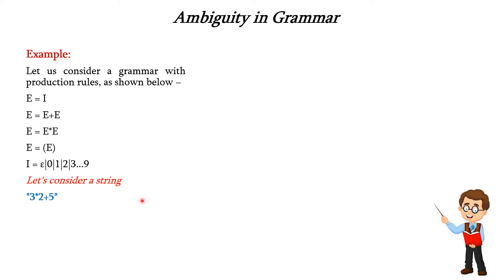Consider the input string: 3 into 2 plus 5. We have to apply these production rules on this input string and construct the parse tree. If we get more than one parse tree, then it is considered an ambiguous grammar.